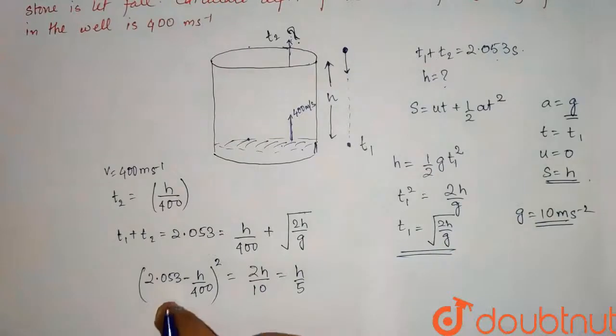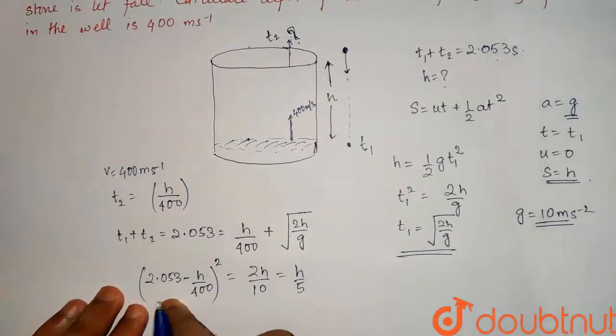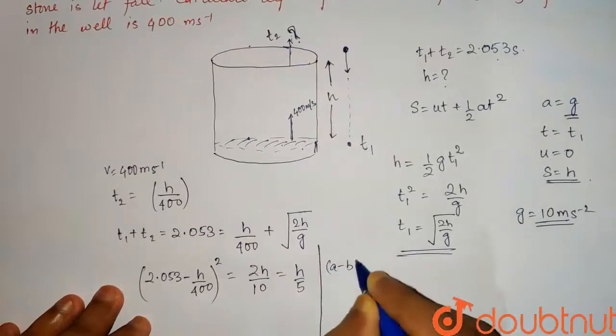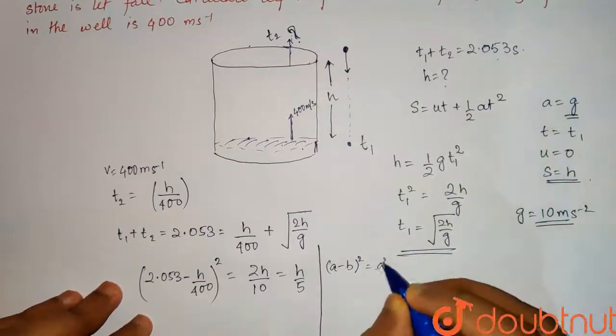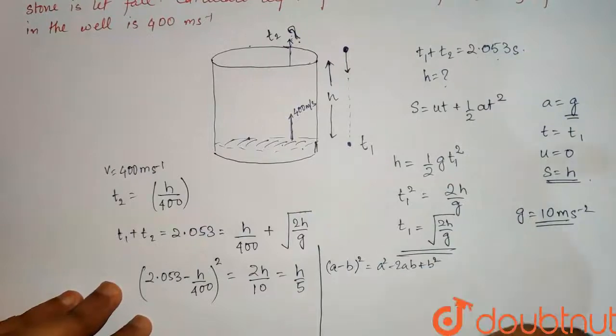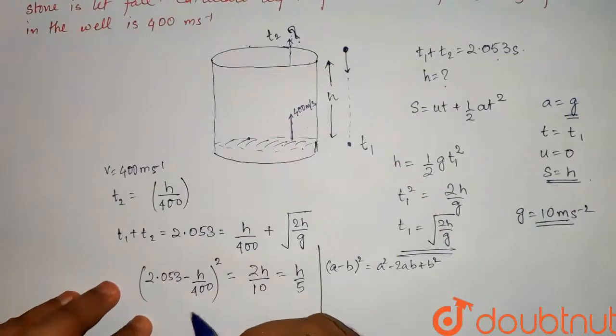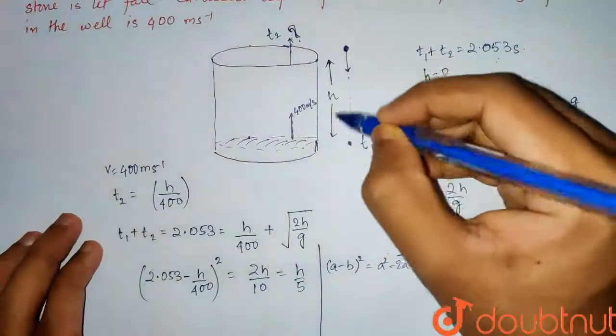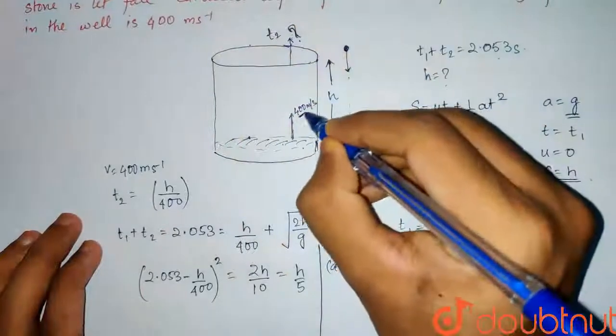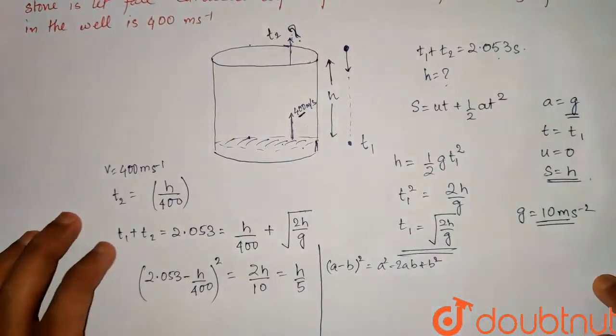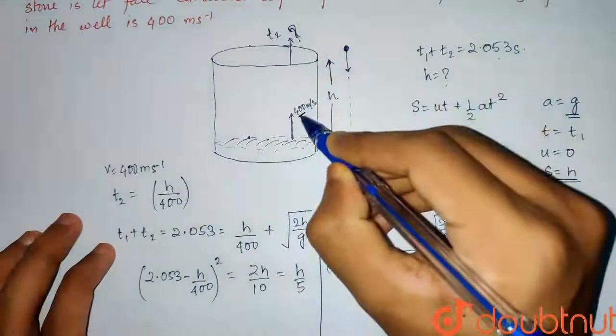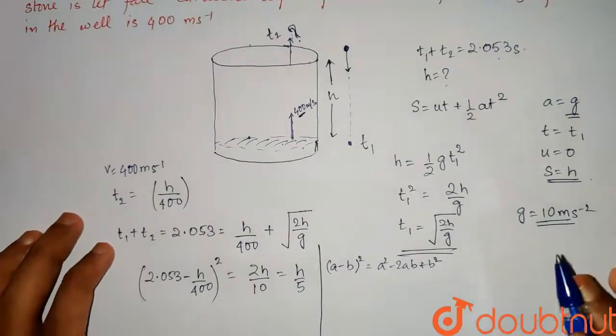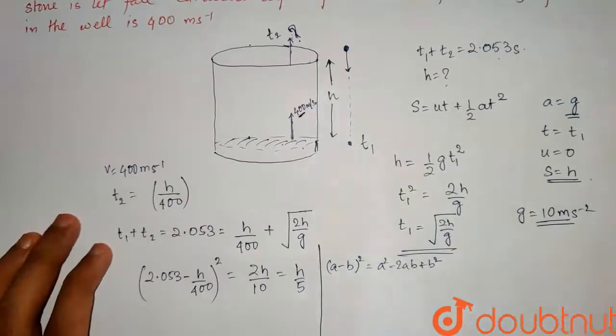We will have 2.053 minus H by 400 whole square is equal to 2H by 10, which is H by 5. Now we will expand this square using approximation. Now you know that a minus b whole square is a square minus 2ab plus b square. But in this case, H by 400, the value will be very small if we compare realistically with a well depth and 400 meters per second. So you can take this approximation that the well depth compared to the magnitude of the speed of sound will be very big. In this case you will have a proper approximate answer if you are going to assume this approximation. So we will neglect b square because it will be very small.